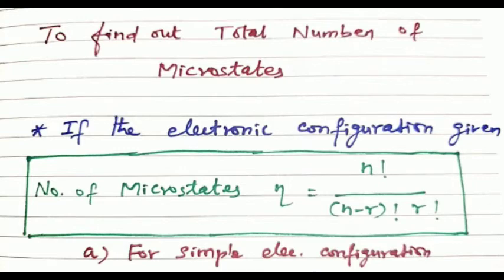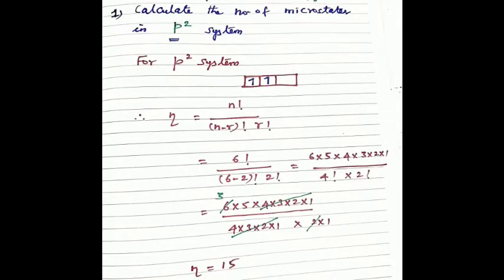First method: calculate the number of microstates in a p² system. For p² electronic configuration, according to Hund's rule we fill px, py, pz boxes. The microstates formula is n factorial by (n minus r) factorial into r factorial. For p², r equals 2 electrons, and n equals 6.